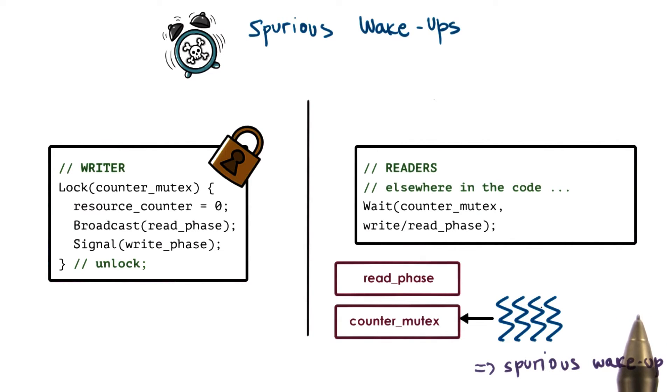The program will still execute correctly. However, we will waste cycles by basically context switching these threads to run on the CPU and then back again to